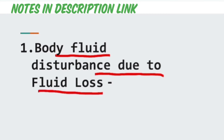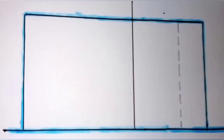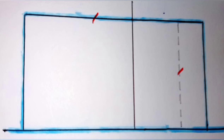We will first study the three body fluid disturbances due to fluid loss. In all three diagrams there is a loss of fluid from the extracellular compartment. In the first diagram, the solid line represents normal conditions and the dashed line indicates a disturbance. Step one: there is a decrease in the extracellular fluid volume. Step two: there is no change in the extracellular osmolarity.